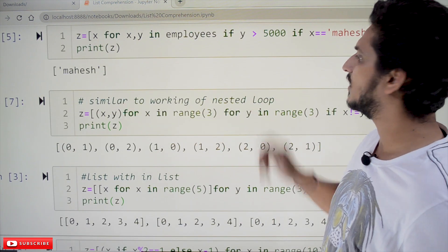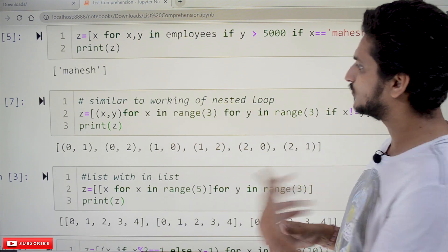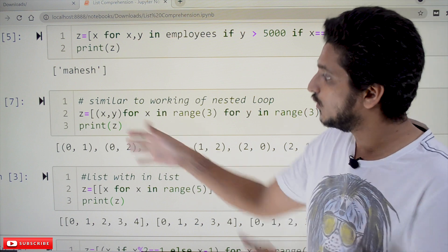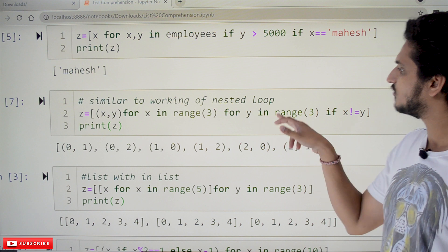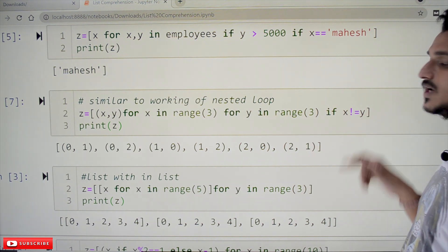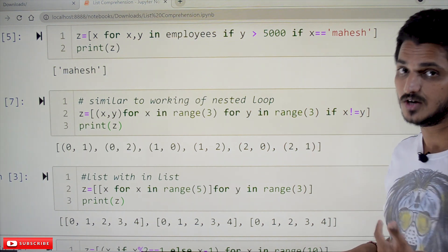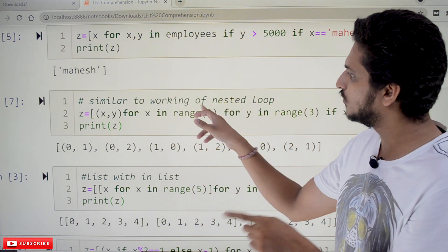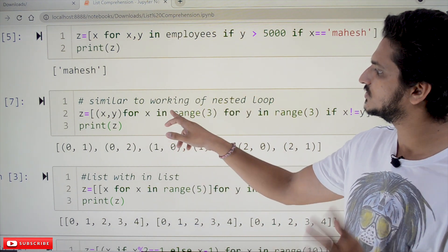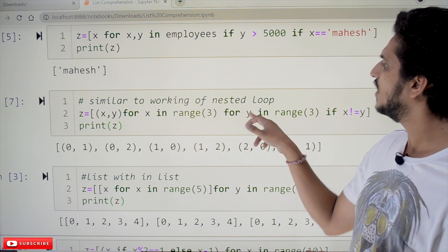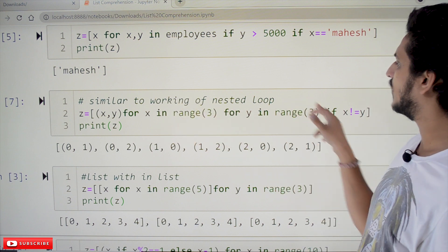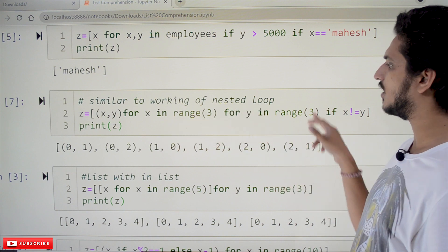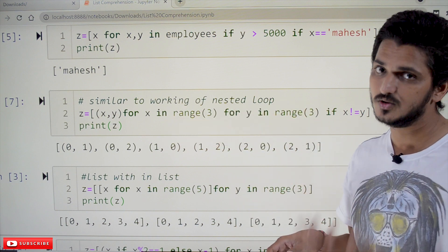Next, coming to the similar to working of nested loops. So, this works similar to nested loops. We are creating x, y values for x in range(3) for y in range(3) if x != y. So, how nested loop works. For x in range of 3 means it will consider 0, 1, 2. For x equal to 0, take all y values. For x equal to 1, take all y values.